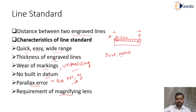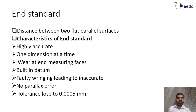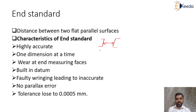Now let us understand the end standard. A standard consisting of standard blocks or bars used for the measurement of length, where the distance is measured between two flat parallel surfaces, is called an end standard. So when the distance is measured between two flat parallel surfaces of a measurement standard, it is referred to as an end standard or end measurement.